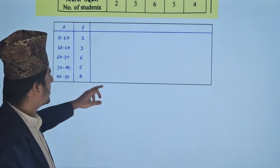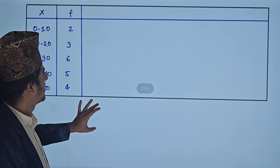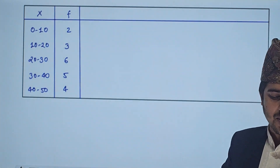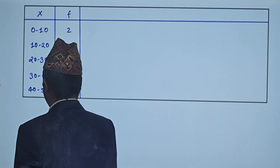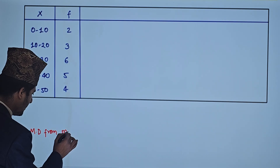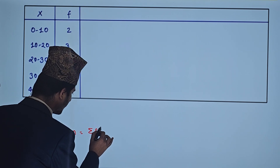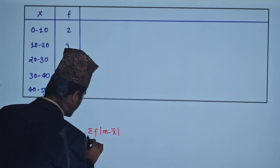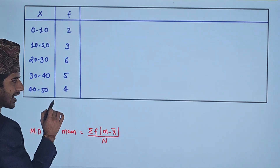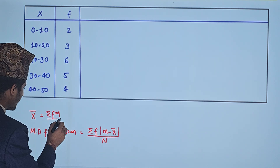Now we are going to find the mean deviation from mean. The formula for mean deviation from mean is: summation of f times |m minus x̄| divided by the number of terms. Here f is frequency, m is the midpoint, x̄ is the mean. The mean is calculated as summation of f×m divided by n.